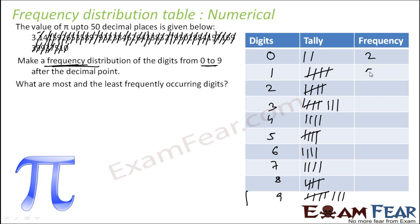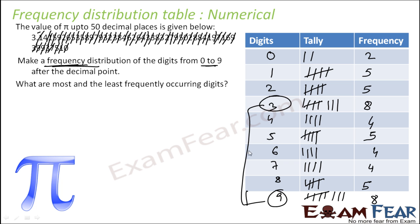If you see the tallied values, the most occurrence is for two numbers — 3 and 9 — that is the most frequent. The least occurrence is for digit 0. So the most frequently occurring digits are 3 and 9, and the least frequently occurring digit is 0.